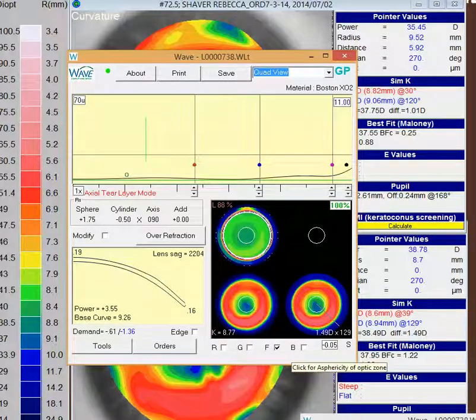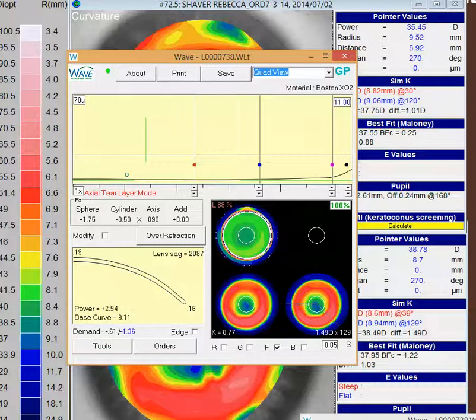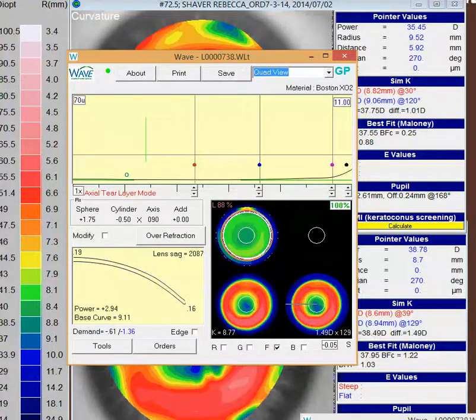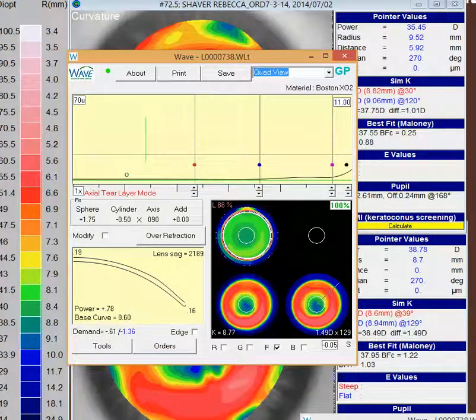I clicked on free form, and I put a little back asphericity in the minus .05, and let Wave design the lens. And you see we had a little back surface of this lens that very closely mimics the topography. And I would expect this lens to do reasonably well in this patient.